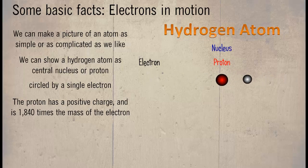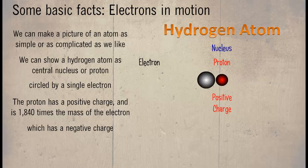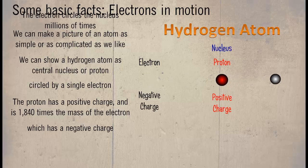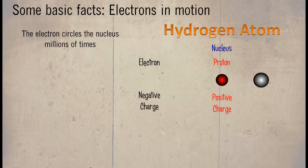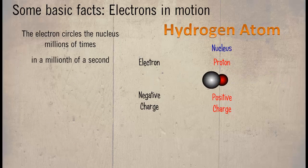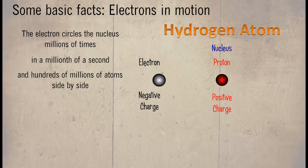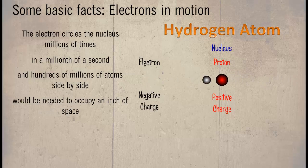The proton has a positive charge and is 1840 times the mass of the electron, which has a negative charge. The electron circles the nucleus millions of times in a millionth of a second, and hundreds of millions of atoms side by side would be needed to occupy an inch of space.